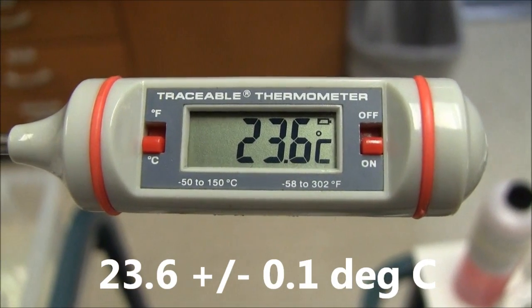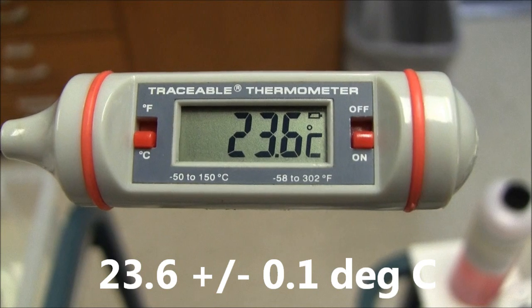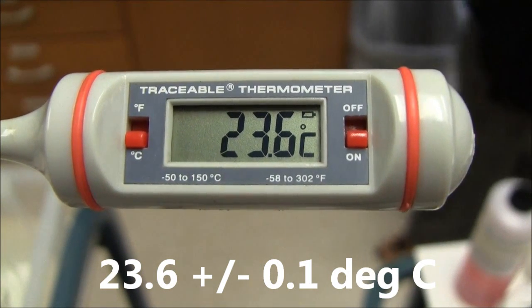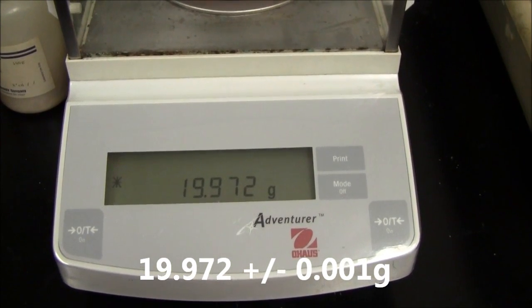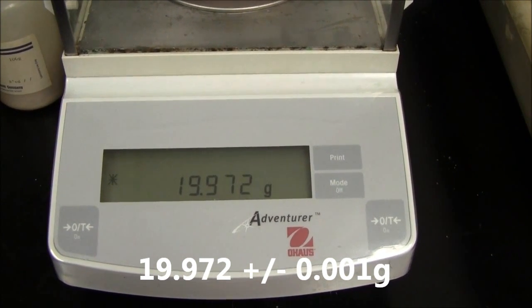And this is 23.6, plus or minus the smallest division, 0.1 degrees C. This one here has a thousandth of a gram, 0.001 grams uncertainty, since it's digital.